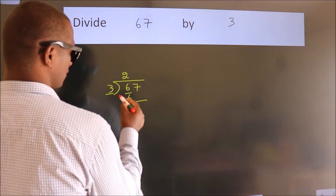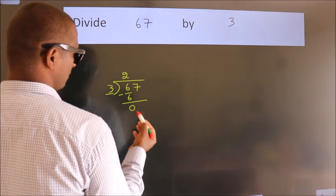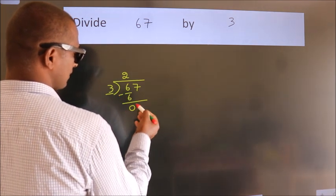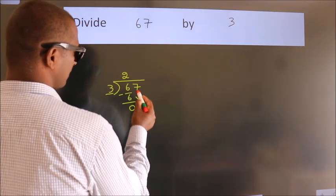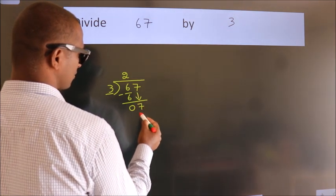Now, we should subtract, we get 0. After this, bring down the beside number. So, 7 down. So, 7.